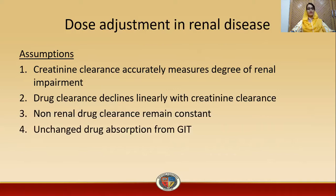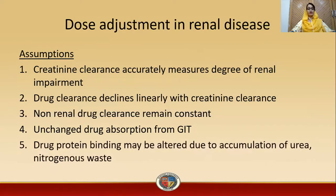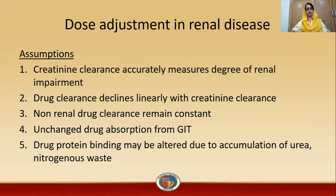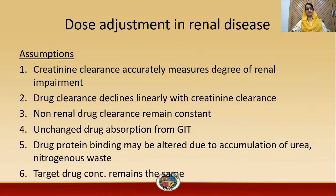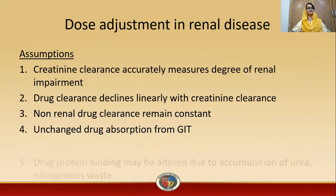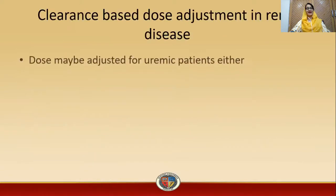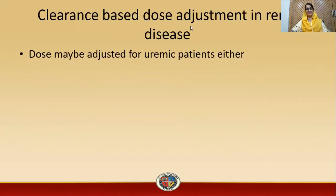Additionally, drug absorption from the GIT is assumed unchanged. Drug protein binding may be altered due to accumulation of urea and nitrogenous waste. The target drug concentration remains the same. These assumptions form the basis for clearance-based dose adjustment in renal disease.